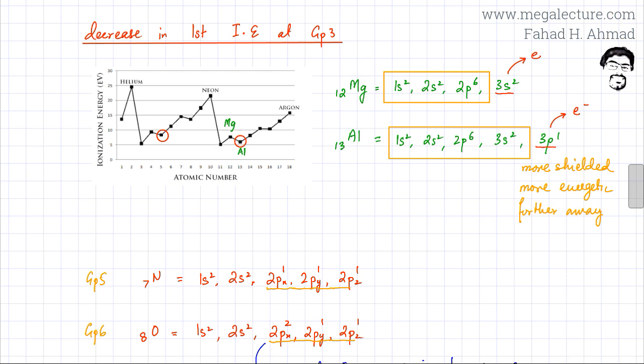But if you look at the subshells of magnesium and aluminum, if you write down the electronic configuration, you would notice that in magnesium, the outermost electrons are in the 3s subshell. Whereas in aluminum, the outermost electrons are in the 3p subshell. If you write down 13 electrons, then aluminum has one electron in its outermost 3p subshell.